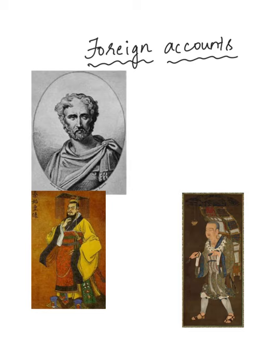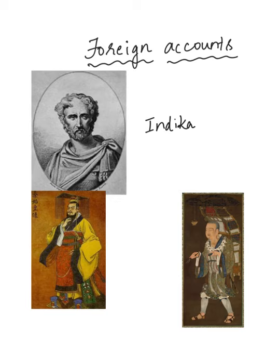Greek, Roman, Chinese, and other travelers came to India and left behind accounts of what they saw. Megasthenes, Fa Hien, and Xuanzang are notable examples. Indica is the book written by Megasthenes, who was an ambassador to the court of Chandragupta Maurya. Fa Hien and Xuanzang from China left accounts describing the social, religious, and economic conditions in India during their visits.